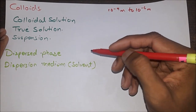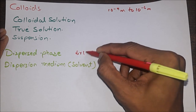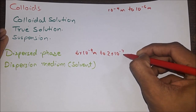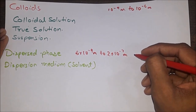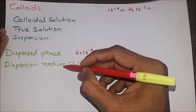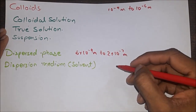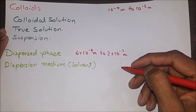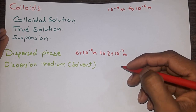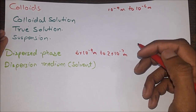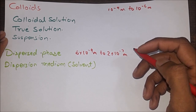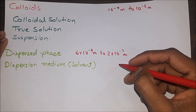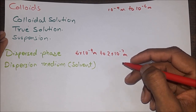Dispersed phase: the substance whose particle size is between 5×10⁻⁹ m to 2×10⁻⁷ m in the colloidal state is known as the dispersed phase or internal phase. Dispersion medium (solvent): the medium in which the colloidal solution is prepared is known as the dispersion medium. For example, water in a starch solution. If the dispersion medium is water it is known as a hydrosol; for alcohol — alcosol; for benzene — benzosol; for air — aerosol.